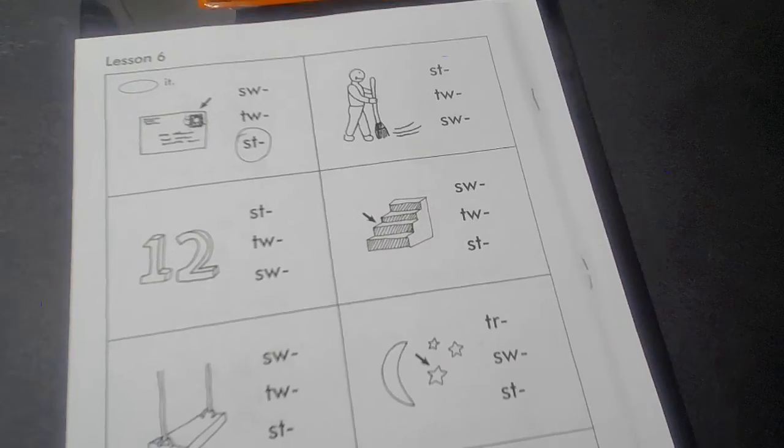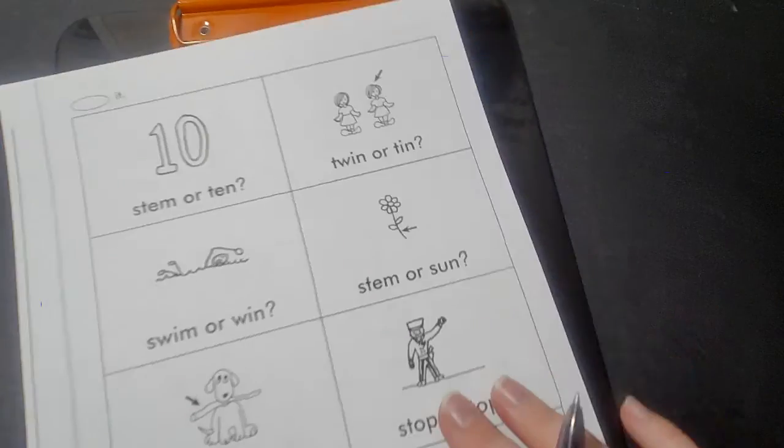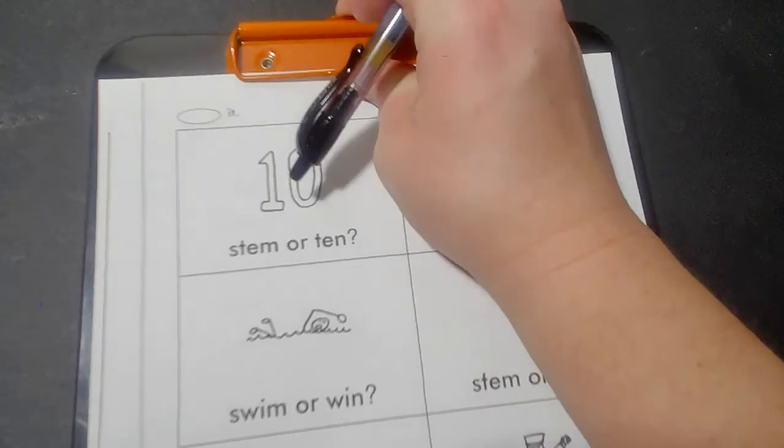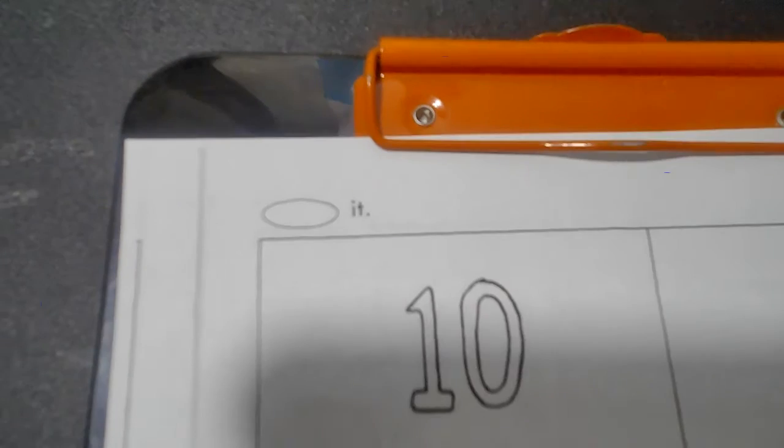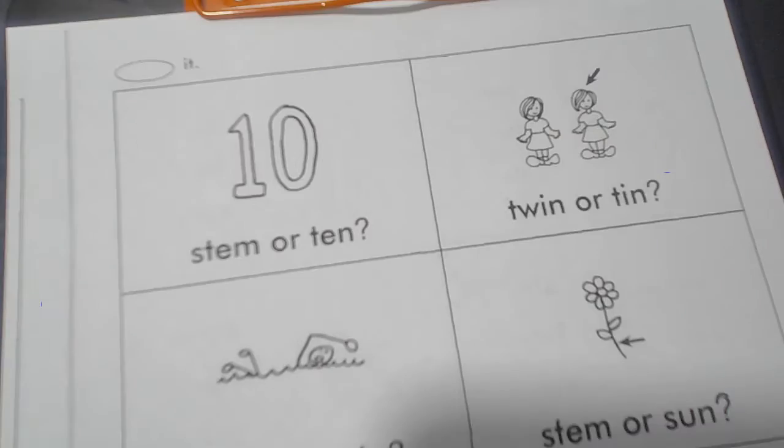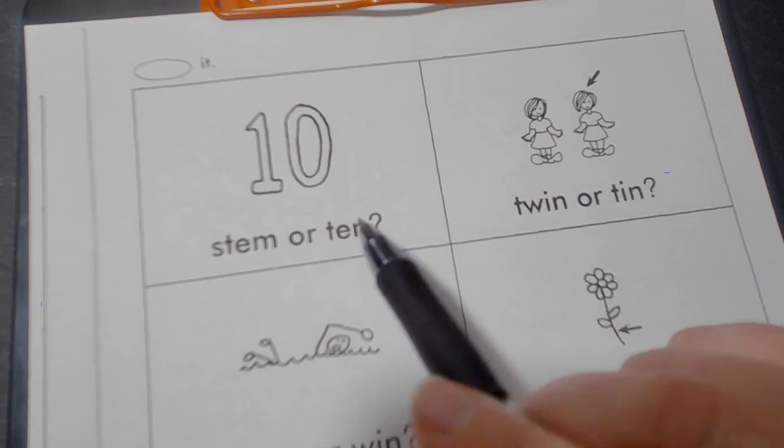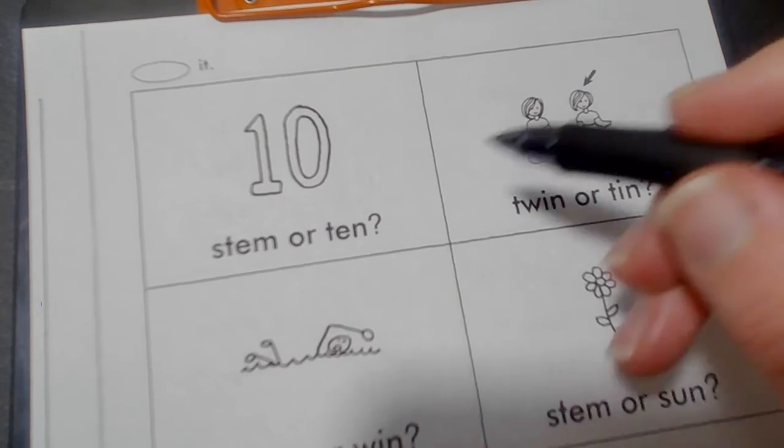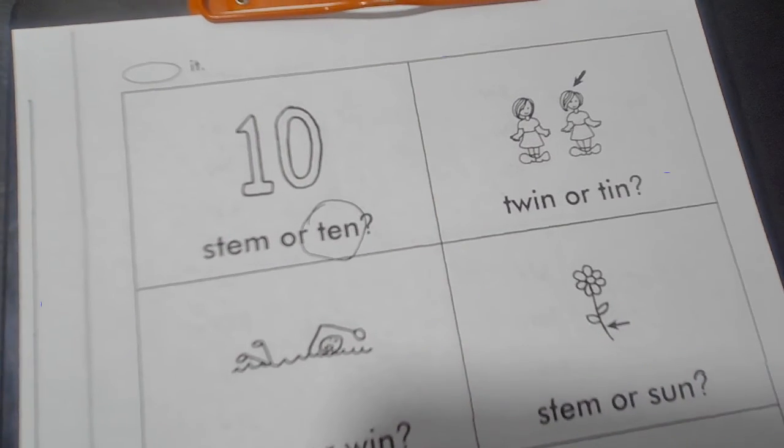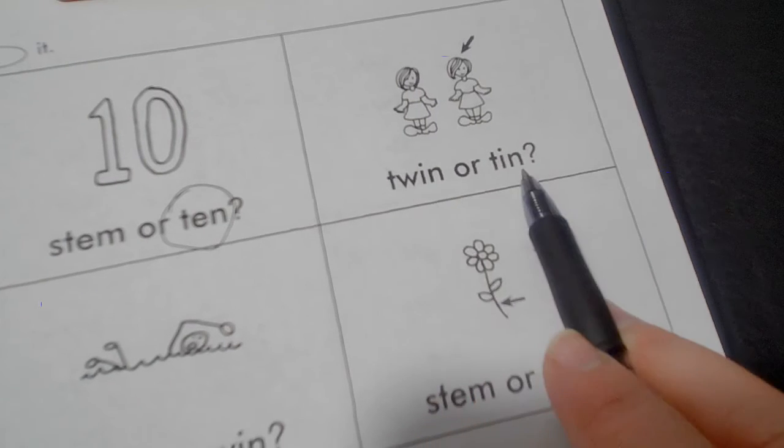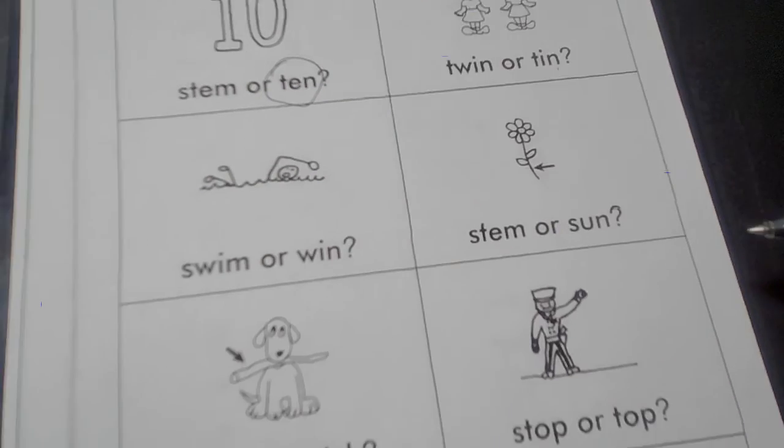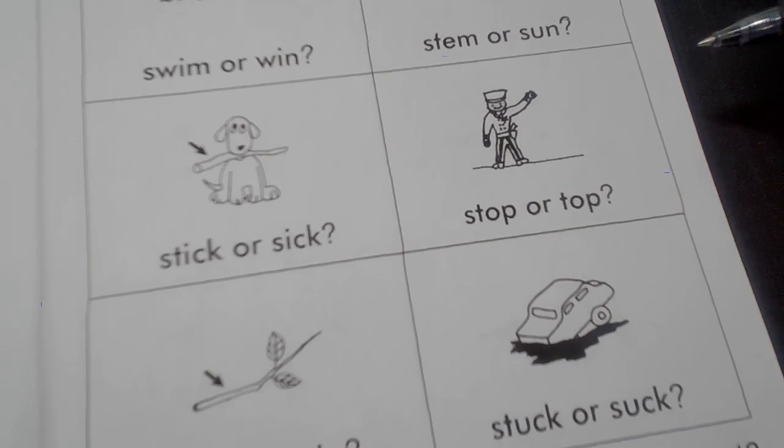Okay, when you are finished with this worksheet let's go to our next one. And we are going to look at the picture and circle it. So is this stem or 10? 10. Okay, go through and read each word and then circle which one it is.